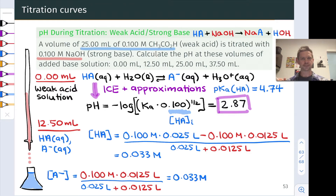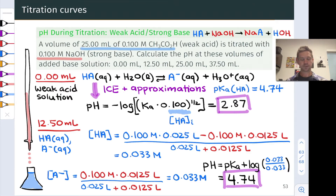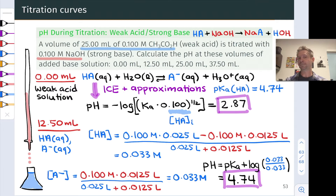At this point we're halfway to the equivalence point — we've consumed half of the HA and converted it into A-. The concentration of HA equals the concentration of A-. What we have is a mixture of a weak acid and its conjugate base: that's a buffer. So we apply the Henderson-Hasselbalch equation: pH = pKa + log([A-]/[HA]). Since those two concentrations are equal, we're taking the log of 1, so pH equals the pKa of HA, which is 4.74.